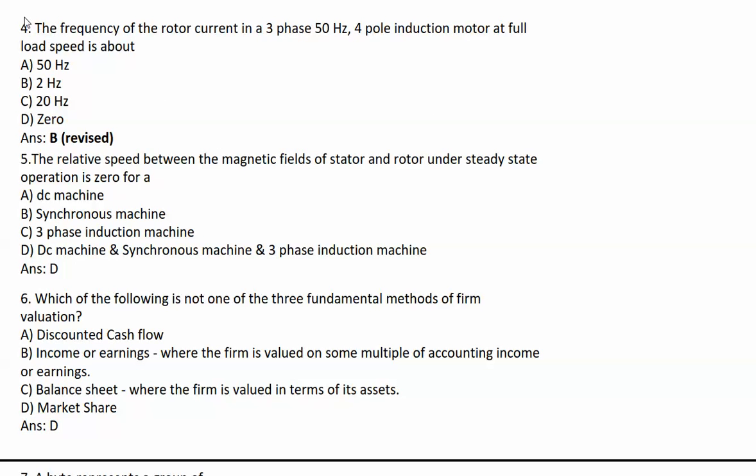Next question: The frequency of the rotor current in a 3-phase 50Hz 4-pole induction motor at full load speed is about. We need to calculate full load speed. First, Ns = 120f/P, so 120 times 50 divided by 4 equals 1500 rpm.